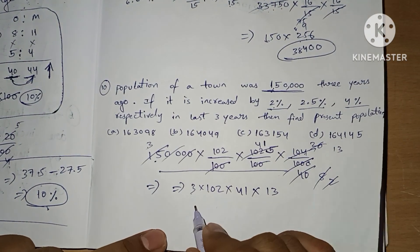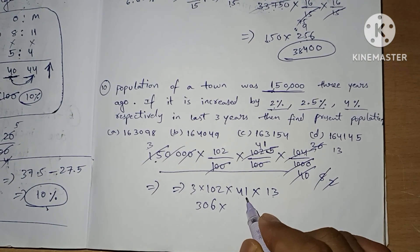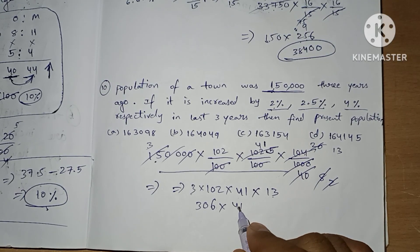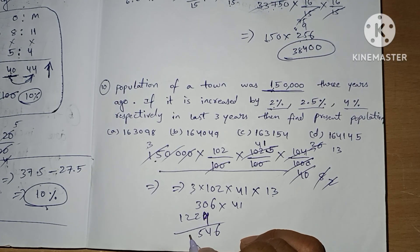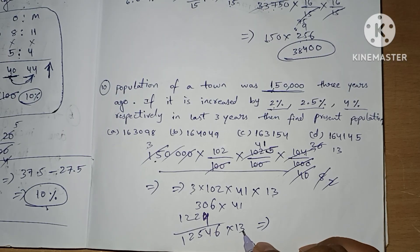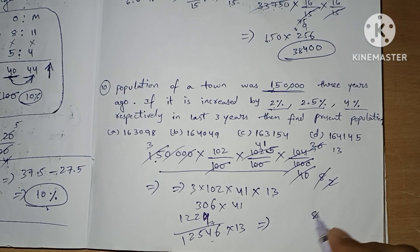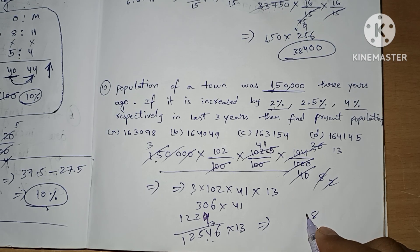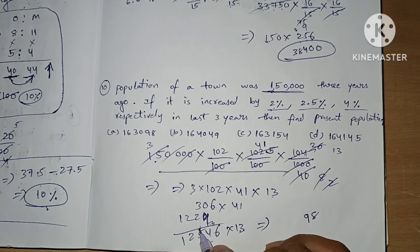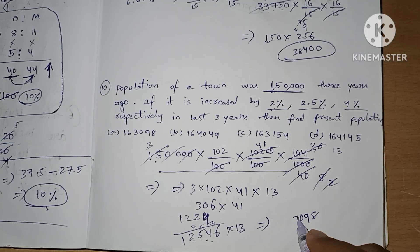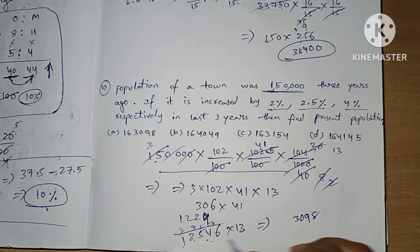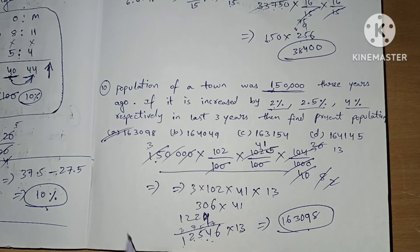So we have 306 × 41 × 13. First we multiply 306 × 41: 4 × 306 = 1224, giving us 12,546. Then multiplying by 13: 13 × 6 = 78, carrying through the steps, we get 163,098 as our answer — option A.